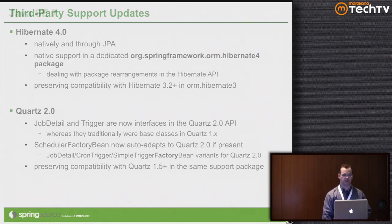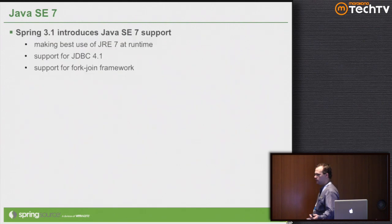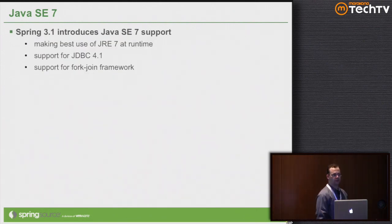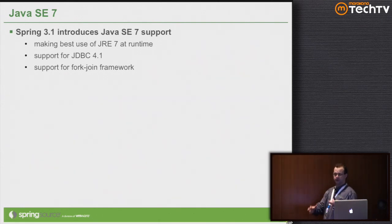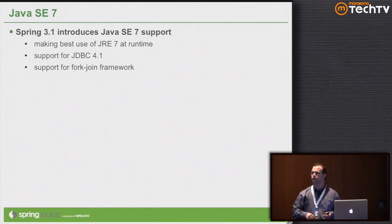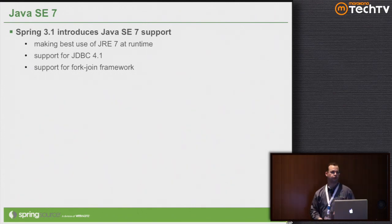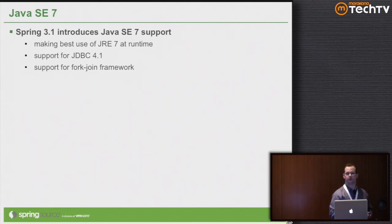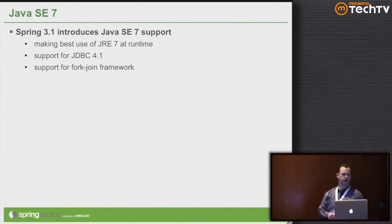Java SE 7 support — it's not required, but if it's there we try to make the best use of it. The fork-join framework can be very useful for computations that could be done in a MapReduce style, and there's now a task executor integration on top of that. The Spring thread pool SPI is mapped to that nicely, and we take advantage of JDBC 4.1 if it's available.